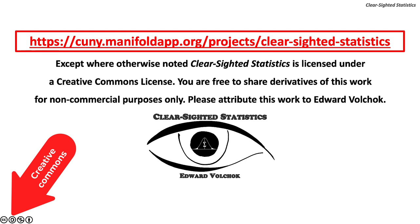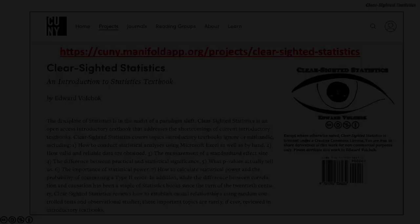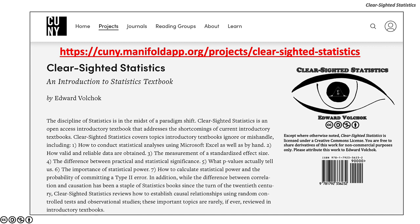Except where otherwise noted, Clearsighted Statistics is licensed under a Creative Commons license. You are free to share derivatives of this work for non-commercial purposes only. Please attribute this work to Edward Volchak. You can access Clearsighted Statistics for free, along with its Excel and PowerPoint files, on the CUNY Commons.